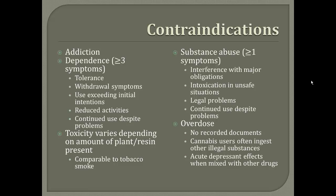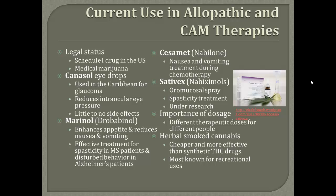Toxicity also varies depending on the amount of plant or resin that's present. There have been no recorded documents of marijuana overdose, but it's pretty well known that cannabis users often ingest other legal substances, and mixed with sedatives or hypnotics could result in increased depressive effects. Marijuana is considered a Schedule I drug in the USA, which means it's a controlled substance with no known medical use. But some states have actually passed medical marijuana laws, and because of that there's been a good amount of research and a few drugs marketed off of cannabis derivatives or synthesized THC.